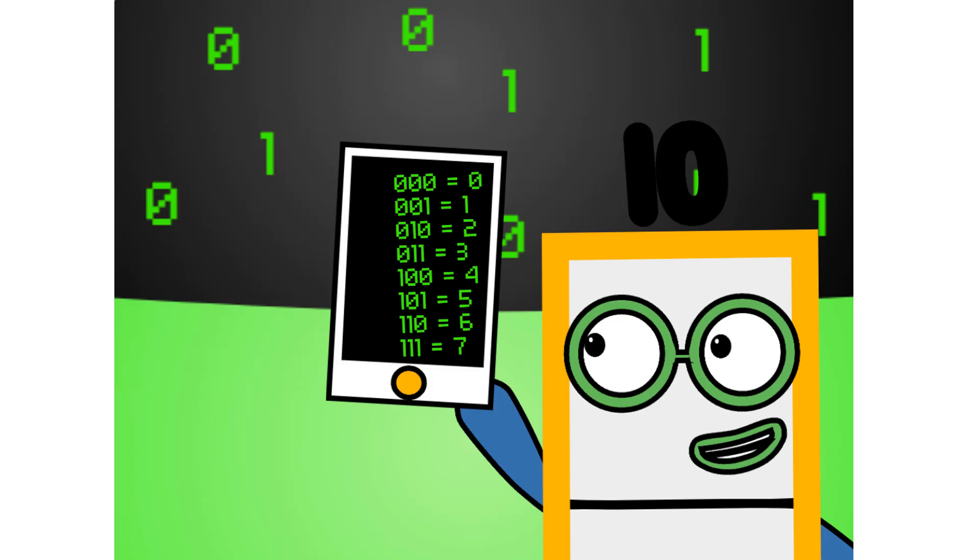There are 8 different combinations of 3-digit numbers in binary. This means that binary can easily be coded into octal. There are also 16 different combinations of 4-digit numbers in binary. This means that binary can easily be coded into hexadecimal 2.